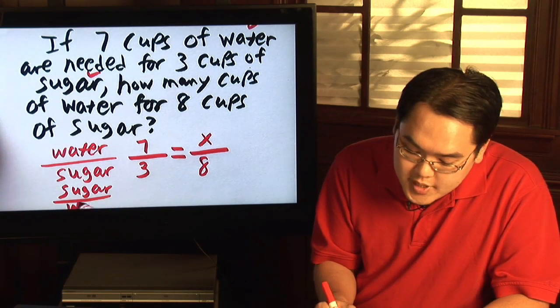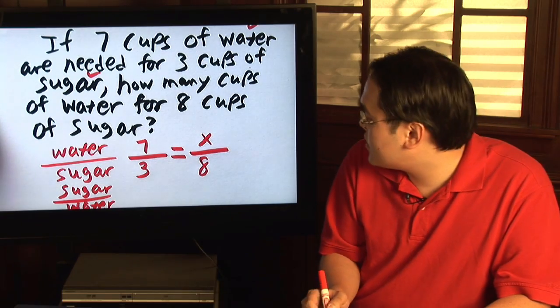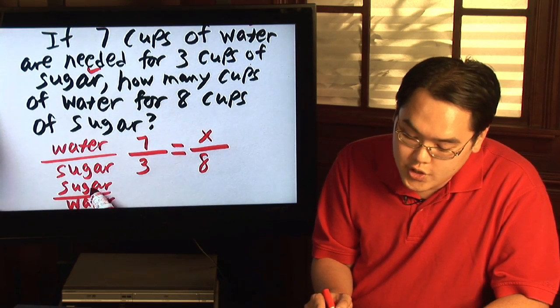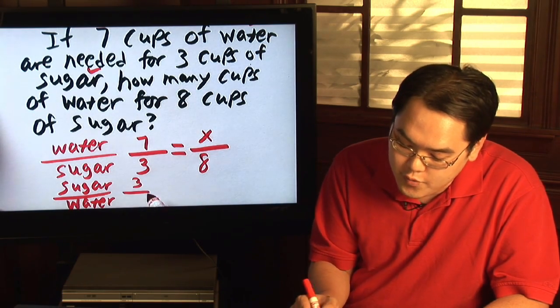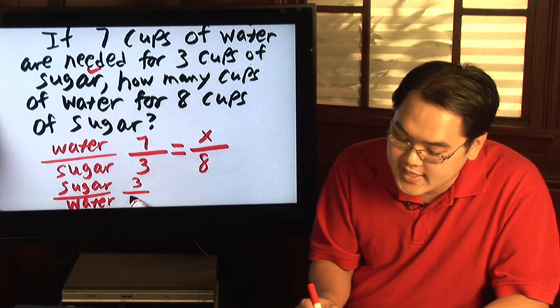But you must be consistent on both ends. So, for example, sugar for the first comparison is three cups, so you have three over the cups of water needed is seven.